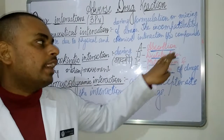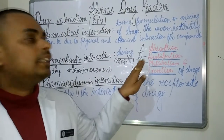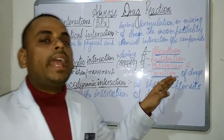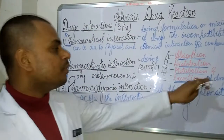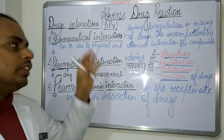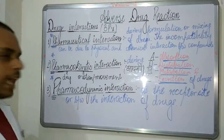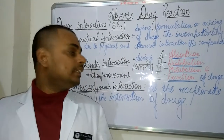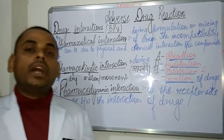After absorption, D refers to the distribution of the drug throughout the human body. Next, M refers to the metabolism of the drug, which occurs in the liver. Finally, E refers to the excretion of the drug. So the second P of drug interactions — pharmacokinetic interaction — can be better remembered by the simple mnemonic ADME.